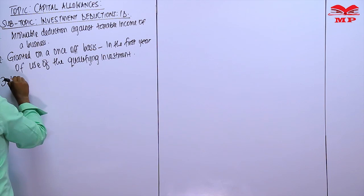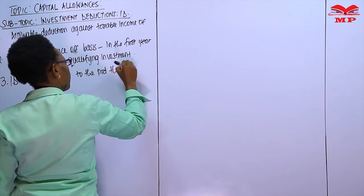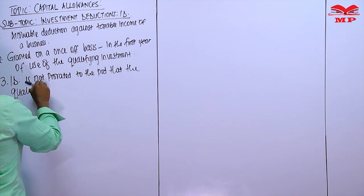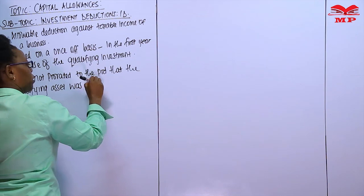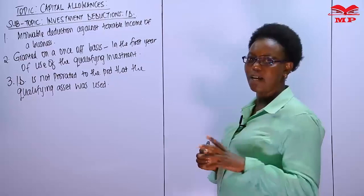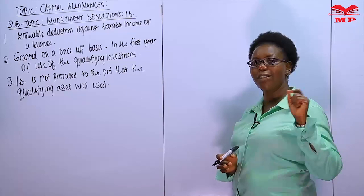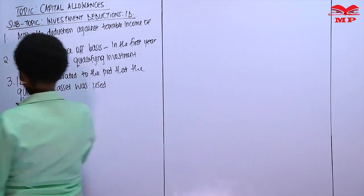Investment deduction (ID) is not prorated — it is not in proportion to the period that the asset was used. Regardless of the time that you acquired the asset, for example if you're dealing with the year of income 2017 and you've been in business in 2017, so long as you used that asset in that year, it is going to qualify.